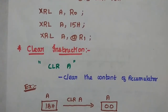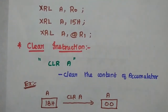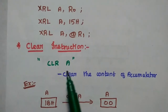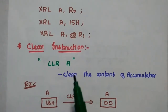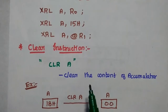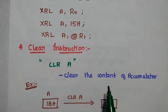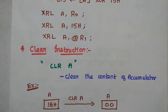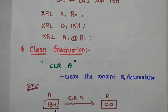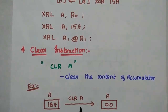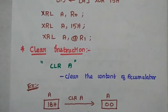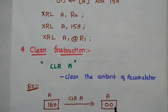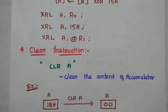The next instruction is the clear instruction, represented as CLR A. It clears the content of the accumulator. For example, if the accumulator has the content 1B, after executing this instruction the content becomes 0.